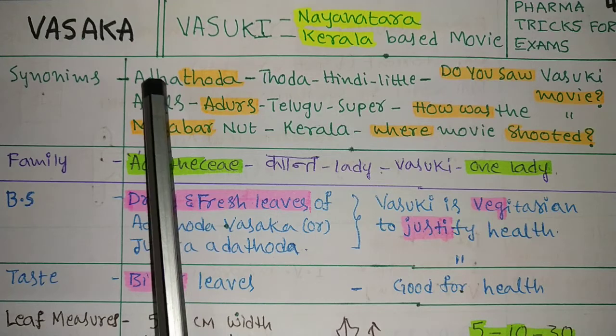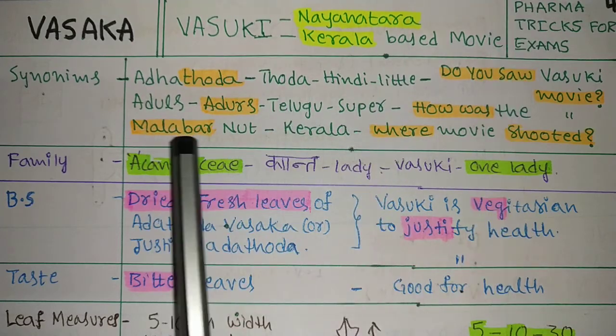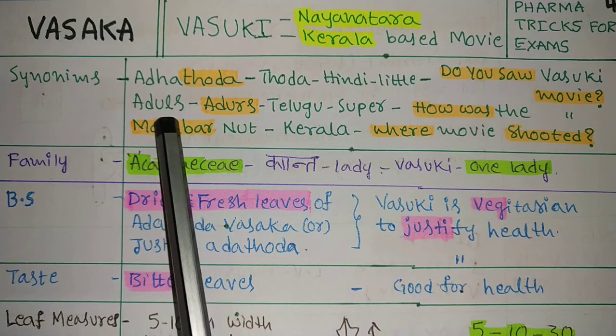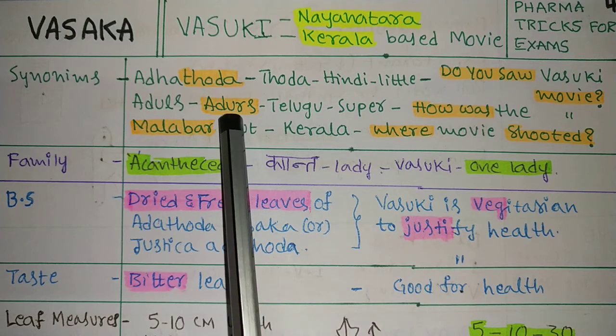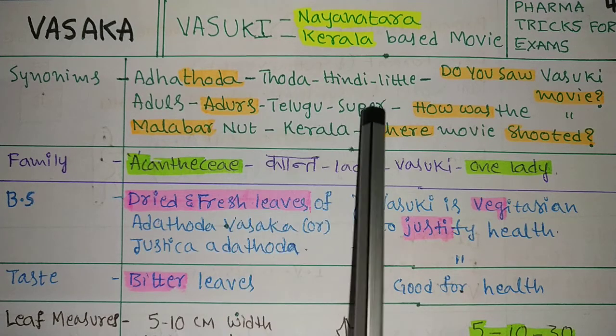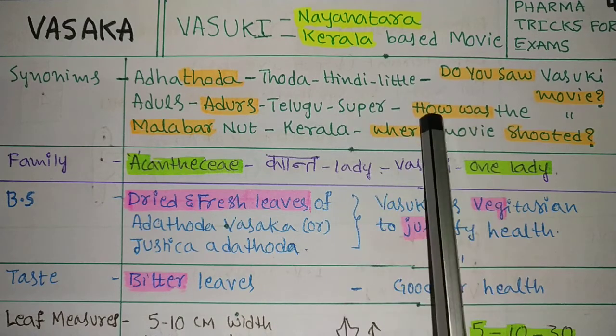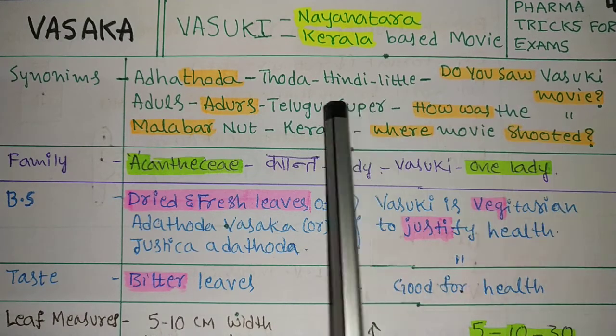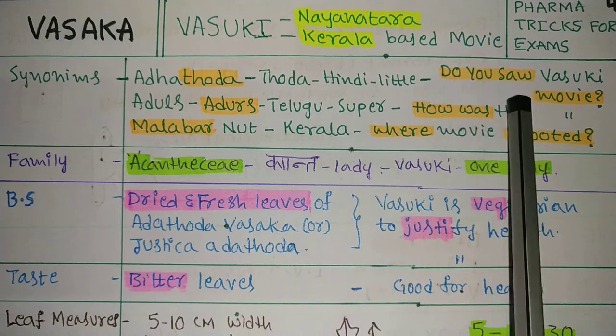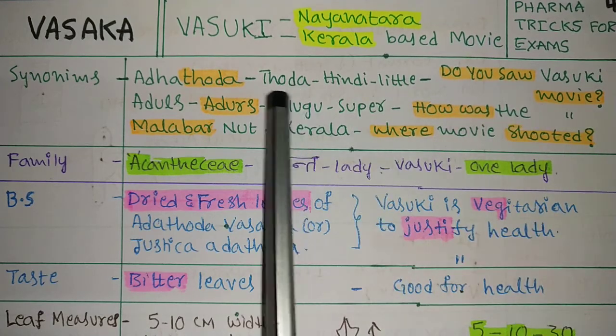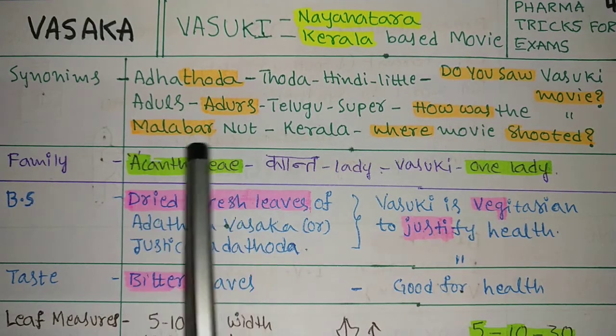Next, Aduls. Aduls means in Telugu 'Aduurs', which means super. How was the Vasuki movie? It is super. Did you see the movie? Thoda. I saw thoda.